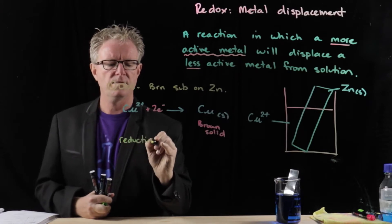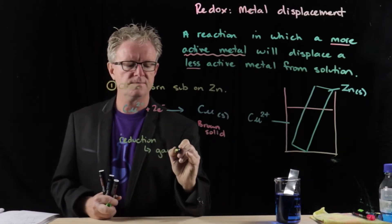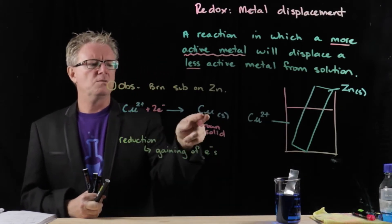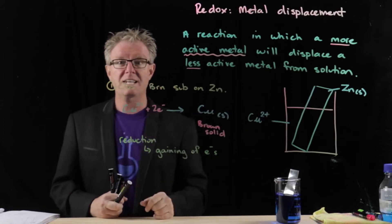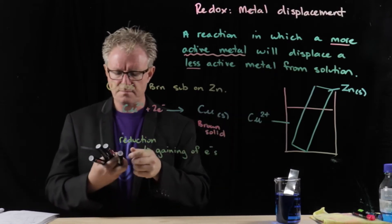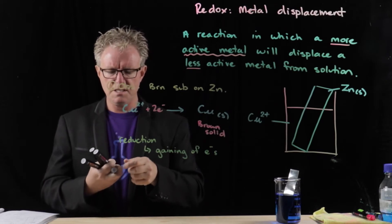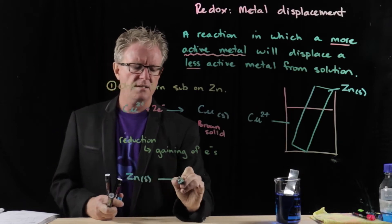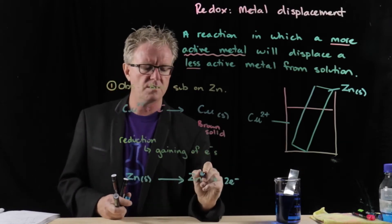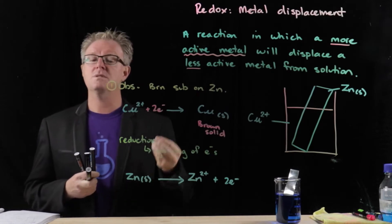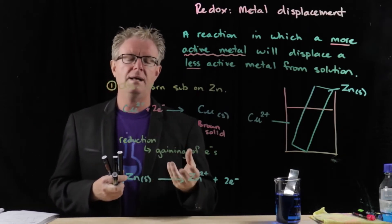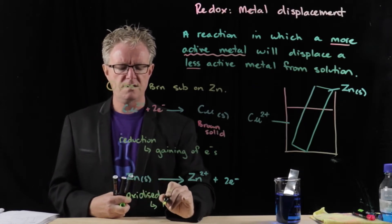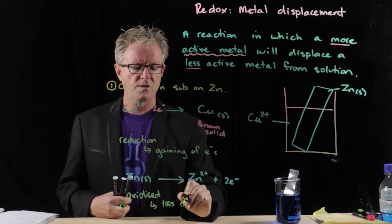What's happening is that the copper in solution, the only way it can form solid copper — which is brown — is if it accepts electrons and becomes what's called reduced. So reduction is the gaining of electrons. Copper has been reduced here. Those electrons had to come from somewhere — they came from the zinc. When atoms lose electrons, we say that they are oxidized, and that is the loss of electrons.